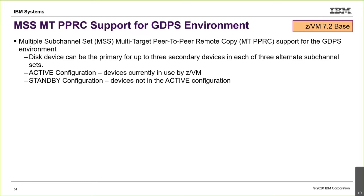Also in the base of 7.2 is multi-target PPRC support for the GDPS environment — the idea that for high resiliency, you want not just a secondary device but multiple secondary devices, copying data to multiple devices. This also involves having those secondary devices in alternate sub-channel sets, as our I/O address space economy changes. ZVM 7.2 introduces a number of changes to how devices are looked at and managed, with the primary requirement being the GDPS environment.